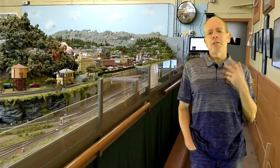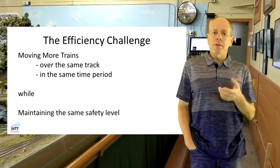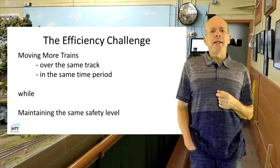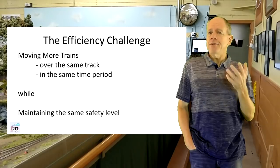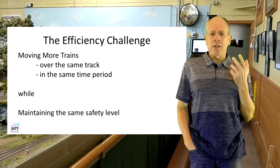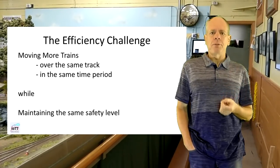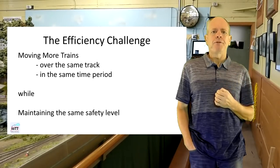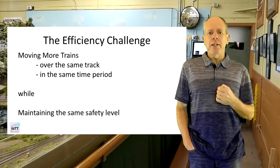With these concepts, we have pretty much covered the basics of railroad traffic. Everything that comes now has to do with traffic efficiency. For example, moving more trains in a shorter time span while still maintaining the same safety level. That really is what is at the core of all signaling systems, increasing the efficiency of a track while maintaining safety. Let's look into some examples to make this better understandable.